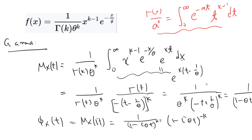The characteristic function is M_X(it), which is 1 divided by (1 minus i*theta*t)^k, or equivalently (1 minus i*theta*t)^(-k).